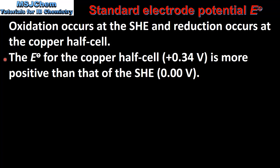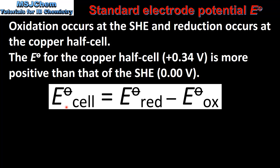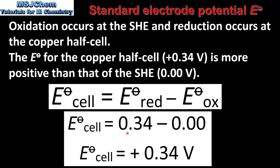This is because the standard electrode potential for the copper half cell, which is +0.34 volts, is more positive than that of the standard hydrogen electrode. Using the same equation to calculate the cell potential — the copper half cell undergoes reduction and the standard hydrogen electrode undergoes oxidation — this gives us a cell potential of +0.34 volts.